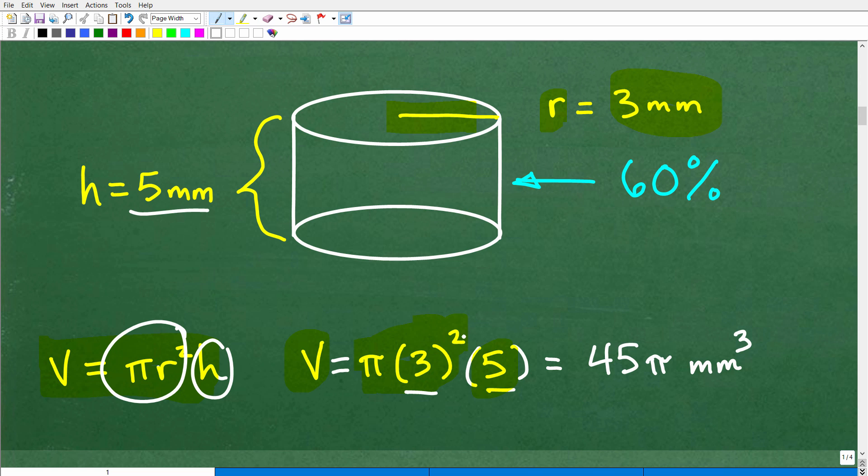So what do we have here? 3², remember, order of operations, you've got to do powers first. This is 9 times 5, which, of course, is 45 times pi. So 45π millimeters cubed is the volume of this entire cylinder, okay? So if you got that right, or if you actually put this down as your answer and you just forgot to take 60%, you know, that's still very, very good.